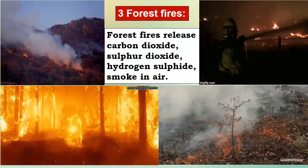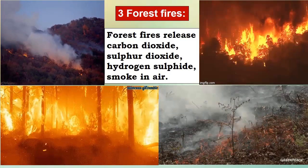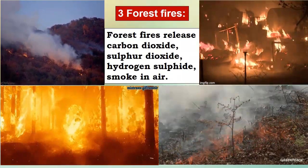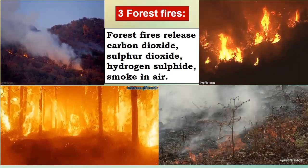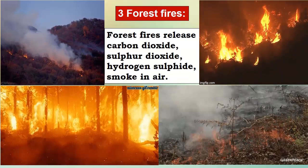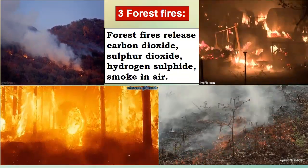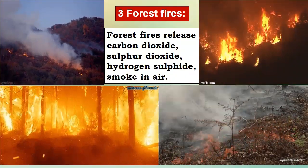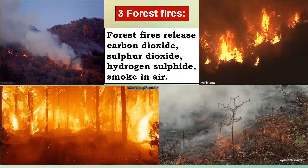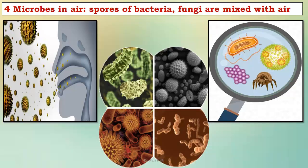When a sudden fire breaks out in the forest, not only do plants burn, but animals also get burnt. This fire releases carbon dioxide, sulfur dioxide, and hydrogen sulfide smoke into the air. The huge destruction takes place in a very short period of time. We all know how difficult it is to grow one plant.